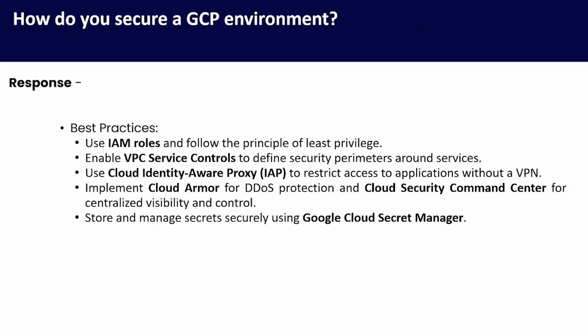How do you secure a GCP environment? Best practices include: use IAM roles and follow the principle of least privilege; enable VPC Service Controls to define security perimeters around services; use Cloud Identity-Aware Proxy (IAP) to restrict access to applications without a VPN; implement Cloud Armor for DDoS protection and Cloud Security Command Center for centralized visibility and control; and store and manage secrets securely using Google Cloud Secret Manager.